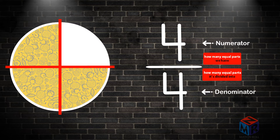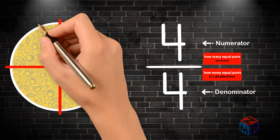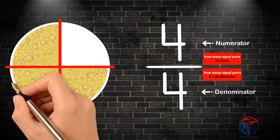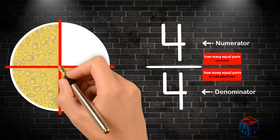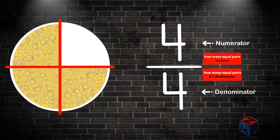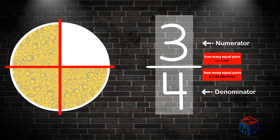But what if someone came by and ate one piece? The pizza is still divided into 4 parts, so the bottom number — the denominator — would still be 4. But we have only 3 of those parts left, so that means the top number — the numerator — would change to 3. So we have 3 over 4 of the pizza. The numerator is 3, the denominator is 4, and the fraction is 3 over 4.